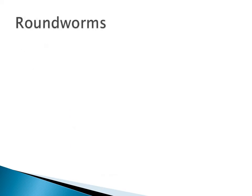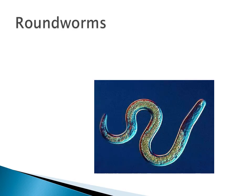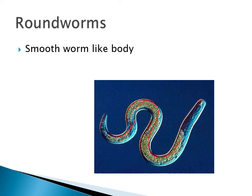Next are roundworms — another kind of worm. You can actually see the internal parts inside these worms. There are no segments; it's just a very smooth worm. You might find some of these in the soil. This type is called a nematode.